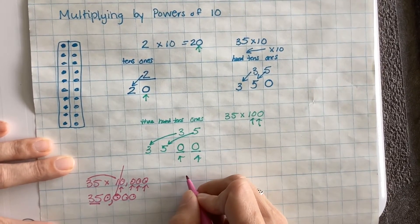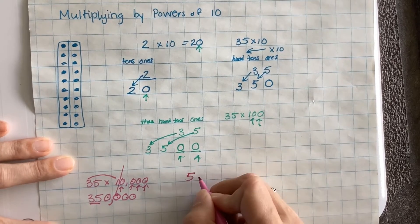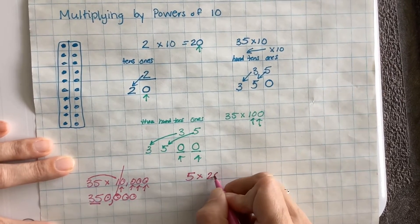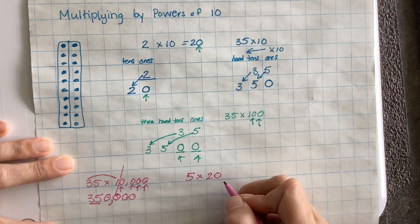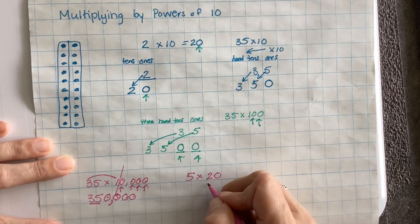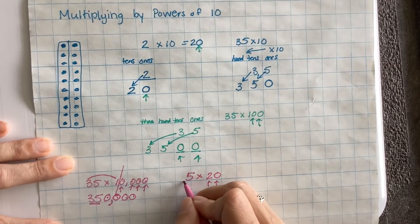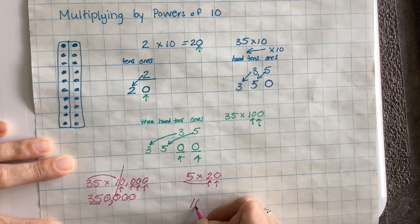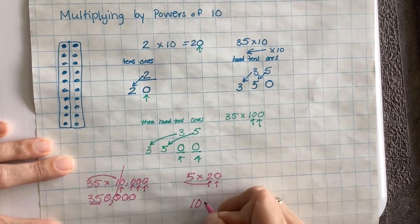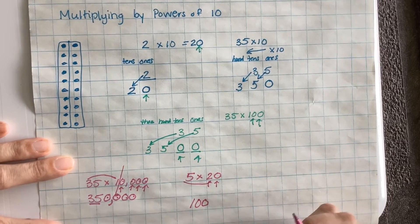What if I wanted to do, let's say, 5 times 20? Oh my gosh, 20 has a power of 10 because it's like 2 with 1 power of 10. So first I take 5 times 2 and that makes 10. And then I have 1 power of 10, so I add it on. 5 times 20 is 100.